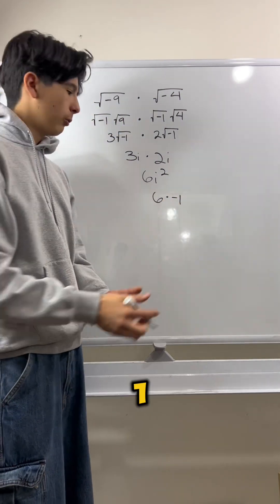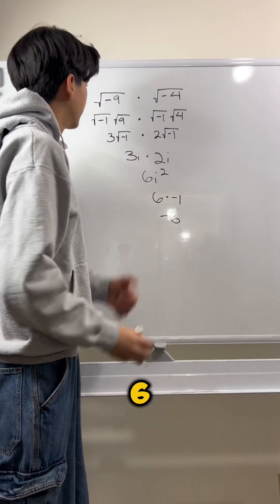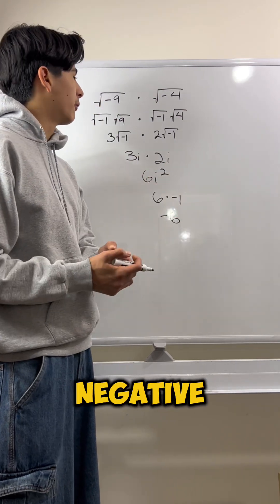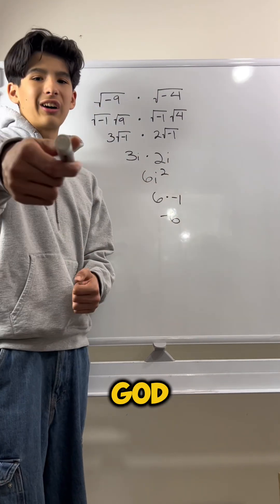And what is 6 times negative 1? Well, it's just negative 6. So, the square root of negative 9 times the square root of negative 4 is negative 6. God bless.